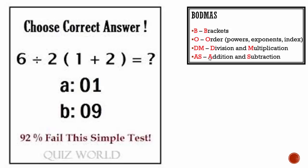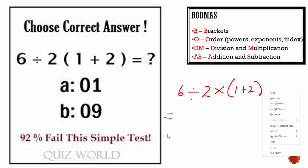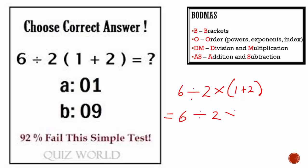Let's write it over. We have 6 divided by 2 multiplied by 1 plus 2. Now we work brackets first. We have 1 plus 2 in brackets so we work that out first, which is 3. Now 6 divided by 2 is 3. 3 multiplied by 3 is 9. So we're done. B is the correct answer.